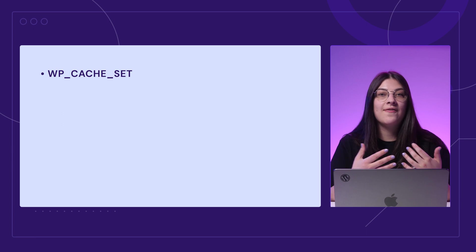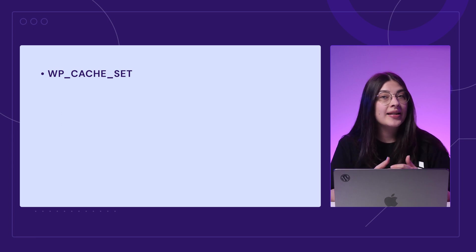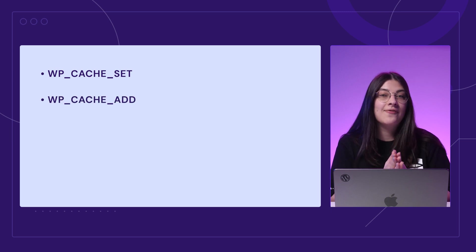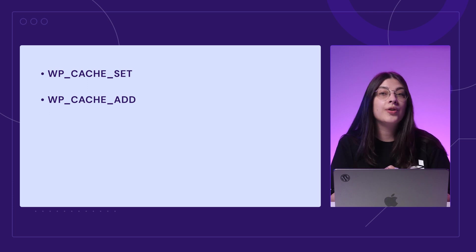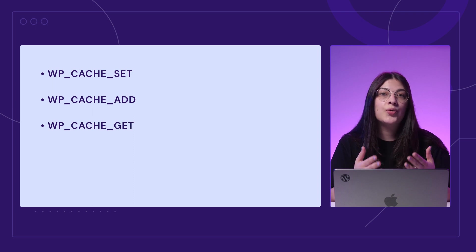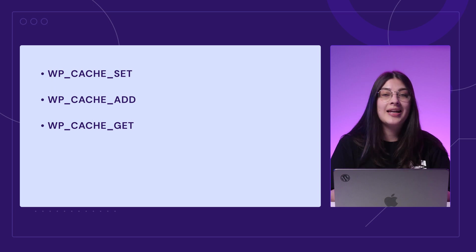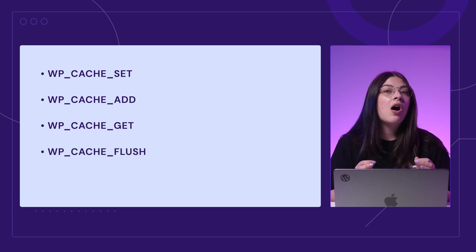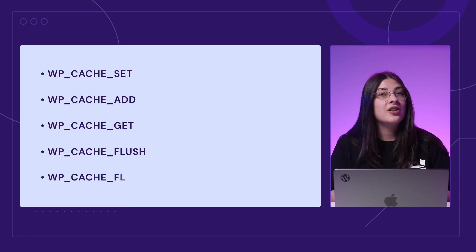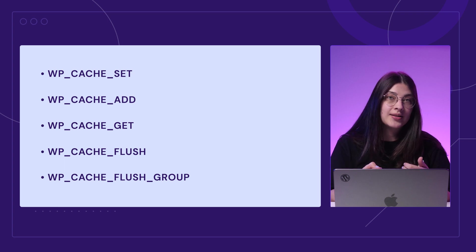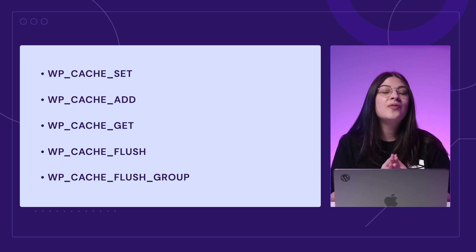The most commonly used are: WP Cache Set, which sets a value in the cache by overwriting the existing data or creating a new dataset. WP Cache Add, which adds a value to the key only if it doesn't exist — otherwise this function will return as false. WP Cache Get, which retrieves an object from an existing cache — if not, this function will return as false. WP Cache Flush, which deletes all cached content. And WP Cache Flush Group, which clears all cached content within a group only if the object caching setting supports it — if not, the function will remove all cached data.